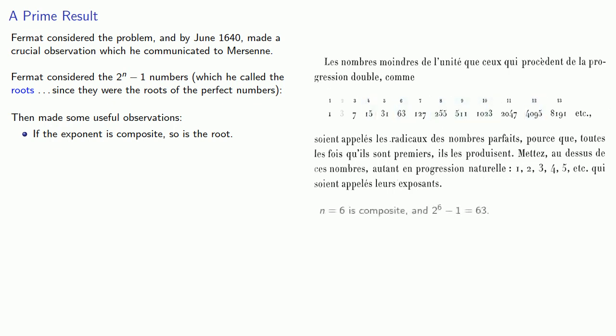For example, the exponent n equals 6 is composite, and the corresponding root 2^6 - 1, which is 63, is composite.